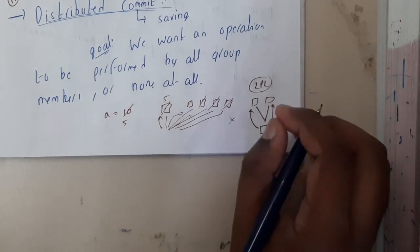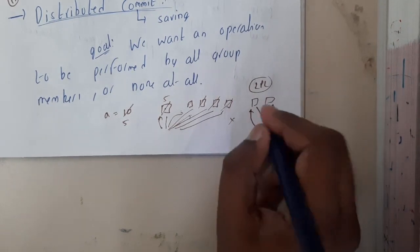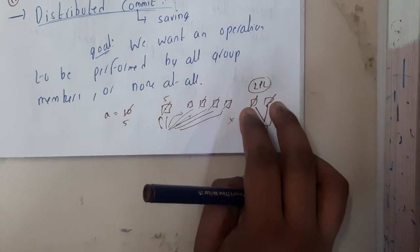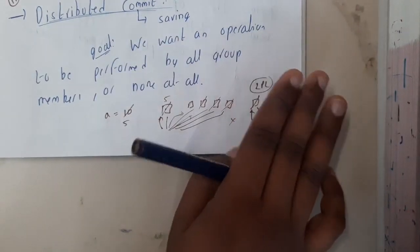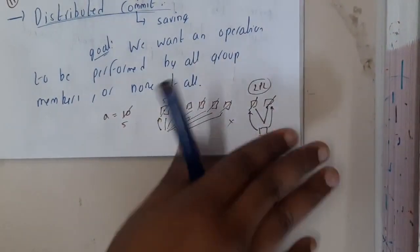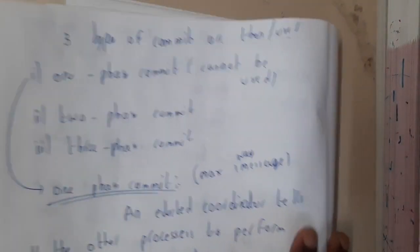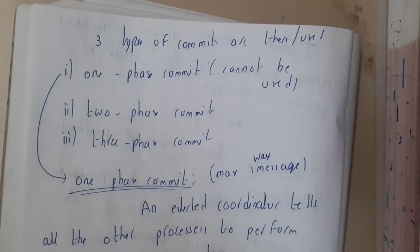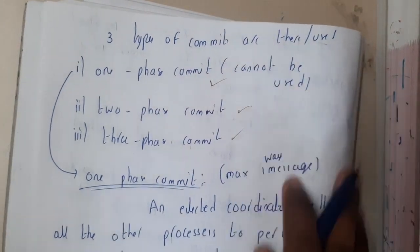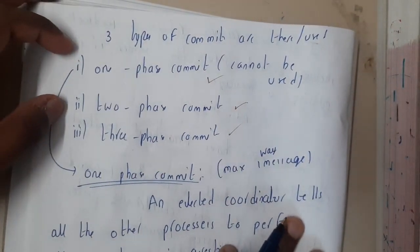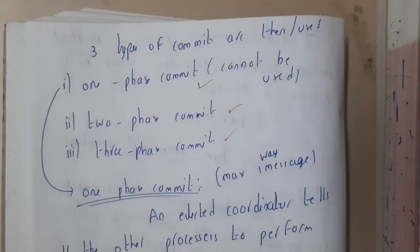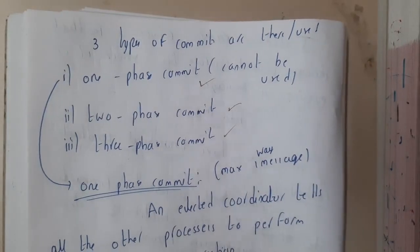Initially you will be asking each of them whether they are ready to update or not. Only if they are ready to update will you proceed with updating. You are taking confirmation from them, so you can ensure that the values will be updated. That is a kind of commit operation. Now, there are three types of commits: one-phase, two-phase, and three-phase. One-phase is so basic that it cannot be used in real-time scenarios.